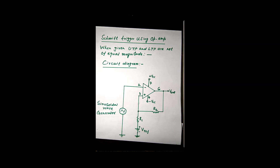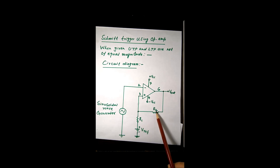Schmitt trigger using operational amplifier, Case 2: when the given UTP and LTP are not of equal magnitudes. This is the circuit diagram, and here we have to find R1, R2, and V reference for given UTP and LTP. Let us consider that the given UTP is +4 volt and the given LTP is +2 volt.